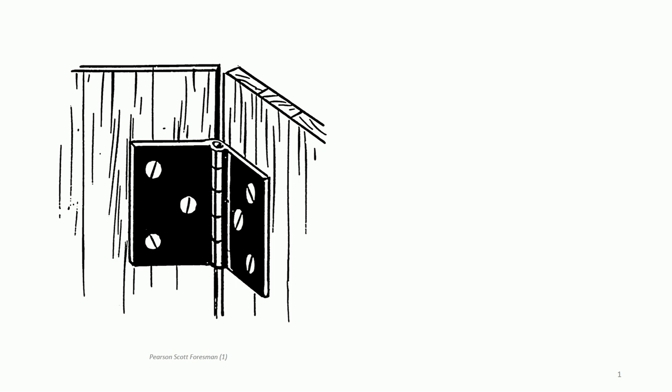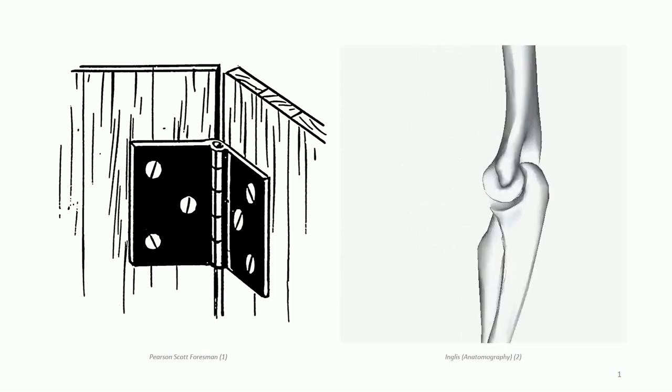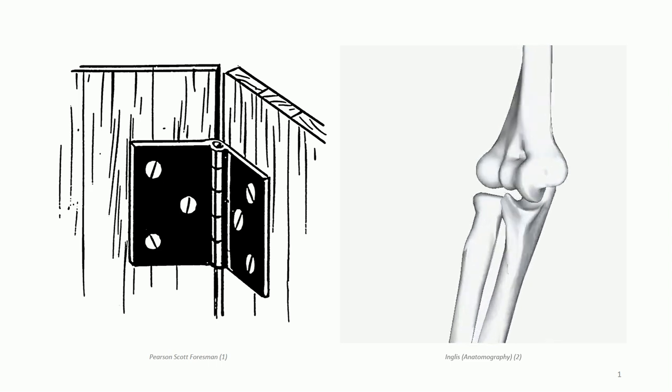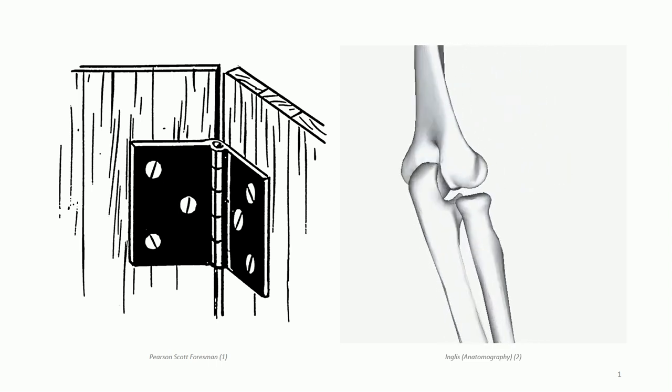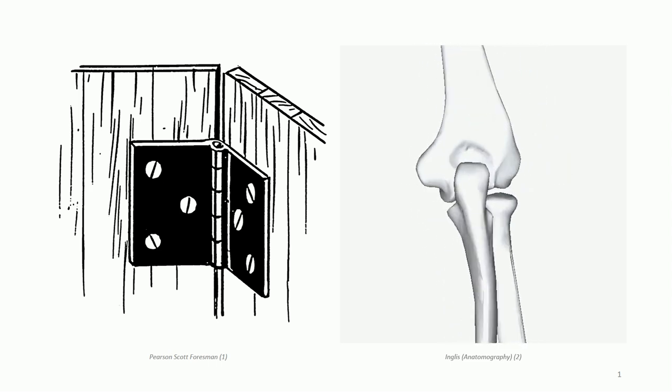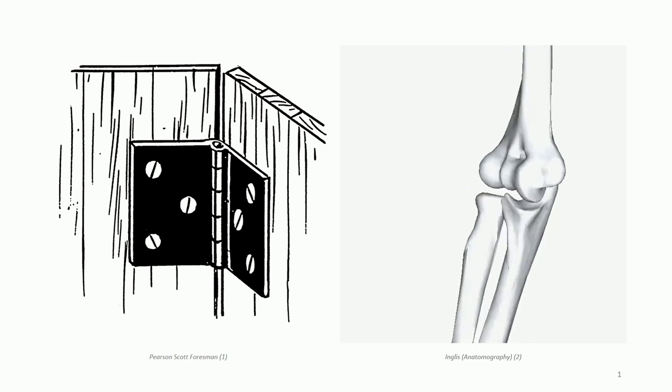In the first lesson, which provided a review of anatomical principles, we likened the elbow to a basic hinge joint. Now this is great for conceptualization, but the elbow joint is actually much more complex and requires further explanation if clinical presentations involving the elbow are to be understood. This is the topic of the present podcast.